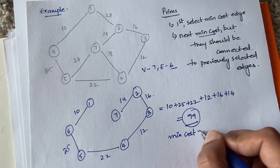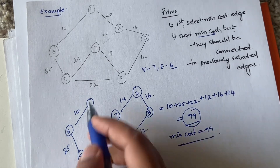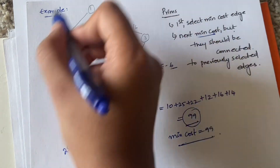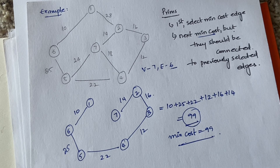All seven vertices are now covered and we have six edges. The total cost is 10 plus 25 plus 22 plus 12 plus 16 plus 14, which equals 99. So 99 is the minimum possible cost for the spanning tree generated from this original graph using Prim's algorithm.